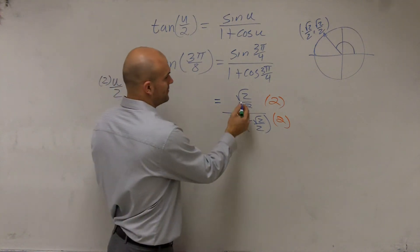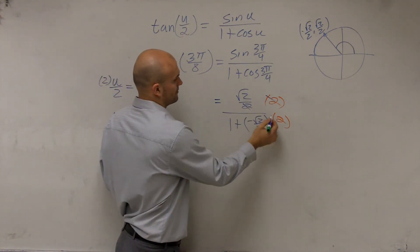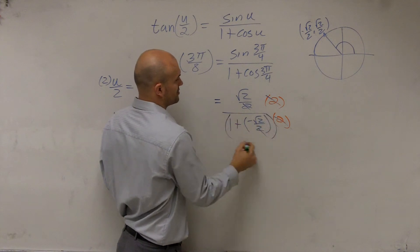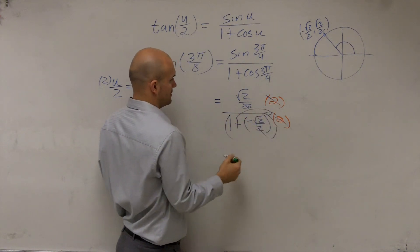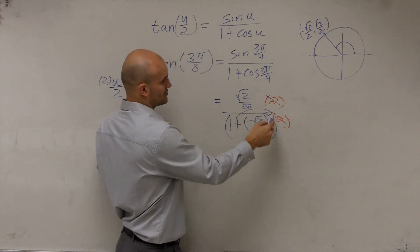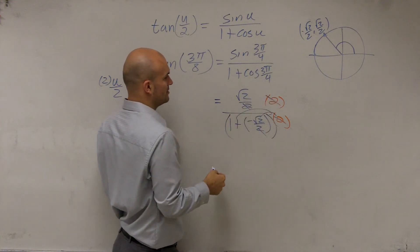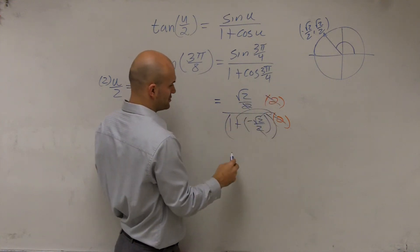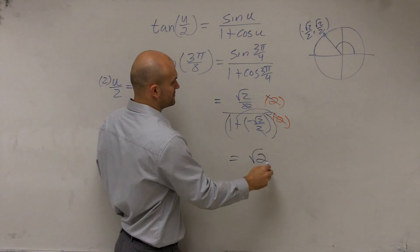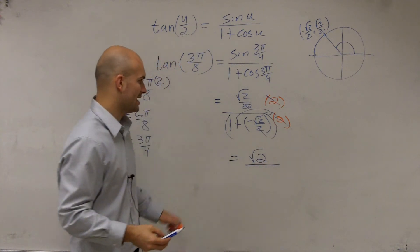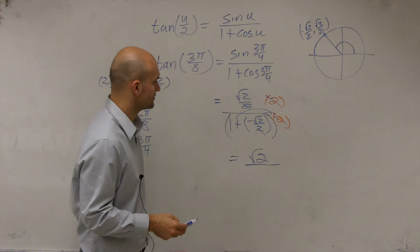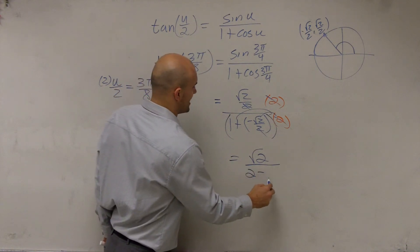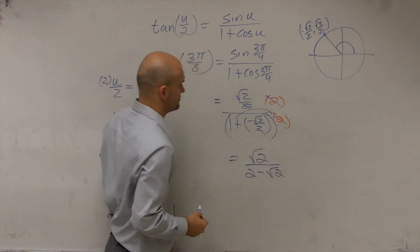So what we're simply going to do, you've got to make sure you distribute your property. So therefore, those will divide out to 1, those divide out to 1. That distributes to 2. So therefore, you're left with the square root of 2 divided by 2 minus the square root of 2.